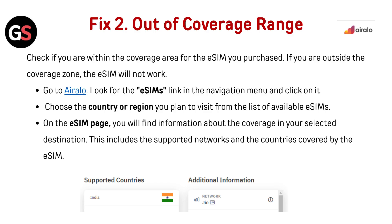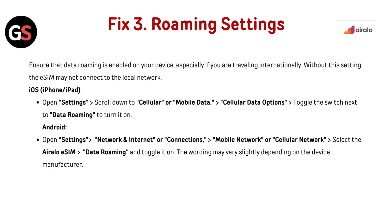This includes the supported networks and the countries covered by the eSIM. Roaming settings: ensure that data roaming is enabled on your device, especially if you are travelling internationally. Without this setting, the eSIM may not connect to the local network.